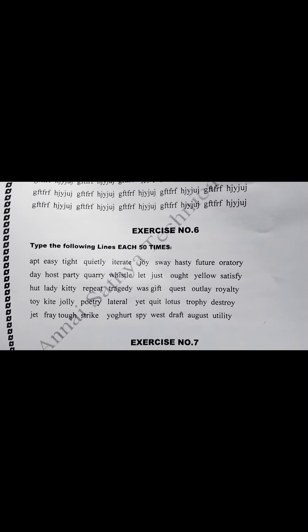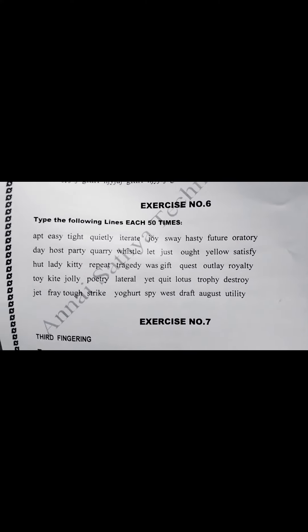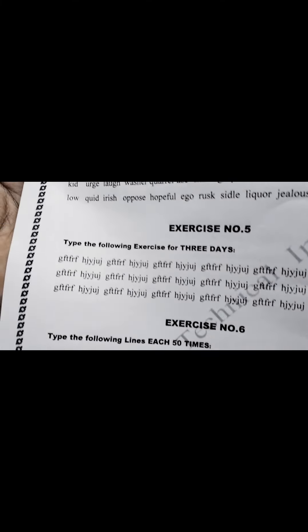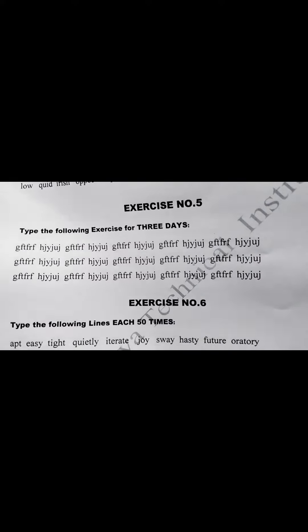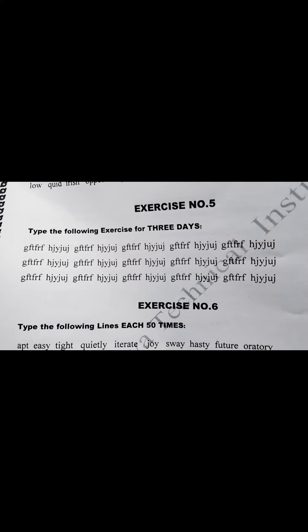Hi friends, welcome to my channel. What are we going to talk about in this video? Exercise No. 6. How do we type this? We can add GF, TF, RF. We add 5 lines daily. That means Exercise No. 6, we type 50 lines. We can add a mistake.